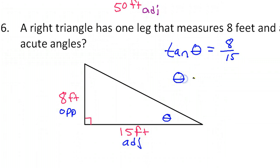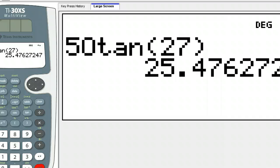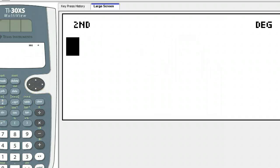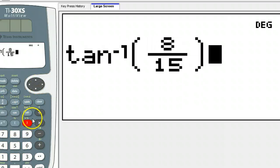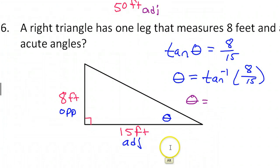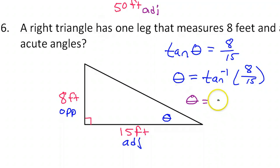To find the angle, we use the inverse trig function, so that would be inverse tangent of 8 over 15. Theta will equal inverse tangent, so I will do second tangent of 8 over 15 in the calculator. That's going to be 28.1 degrees.